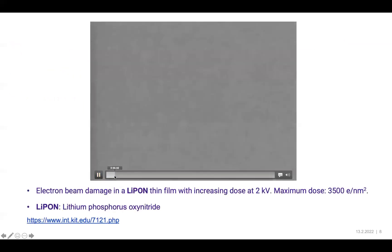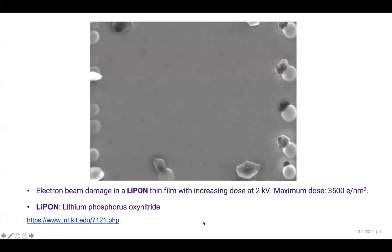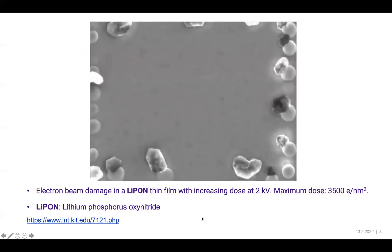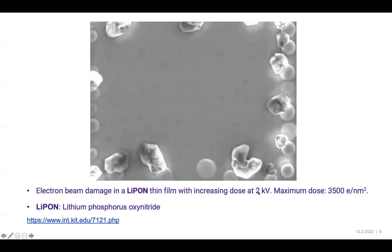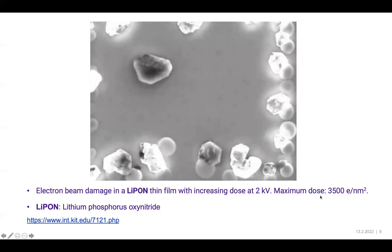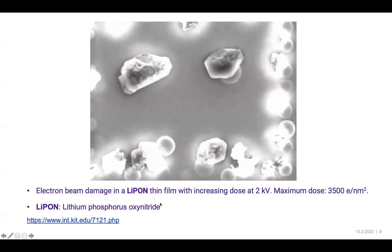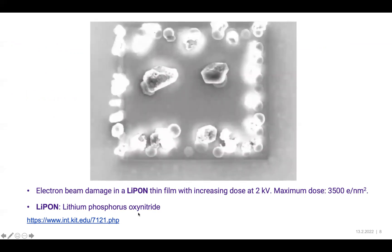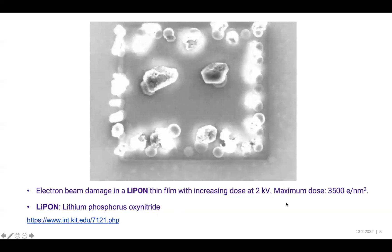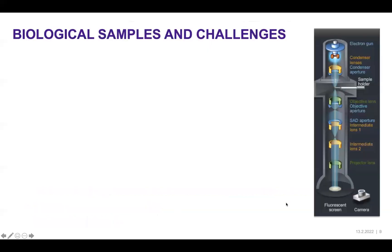Here is a movie showing how scanning electron microscope imaging also affects samples. If you have extremely low kilo electron volts but a dose of even 3,500 electrons per square nanometer, some sensitive samples such as lithium phosphorus oxy nitride undergo immediate beam damage. It is even more amplified when we go to biological samples.